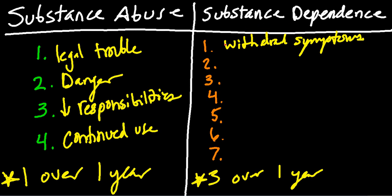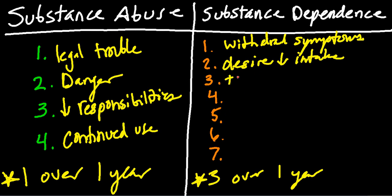Withdrawal symptoms after discontinuation of a substance classify as dependence. Second, if you have the desire to decrease your intake — recognizing the need to cut back — that may indicate dependence. Third, tolerance: if you smoke a bowl at night to relax but over time that same bowl doesn't relax you as much, and a year later you need two bowls, you've increased your tolerance. That's an indication of substance dependence.